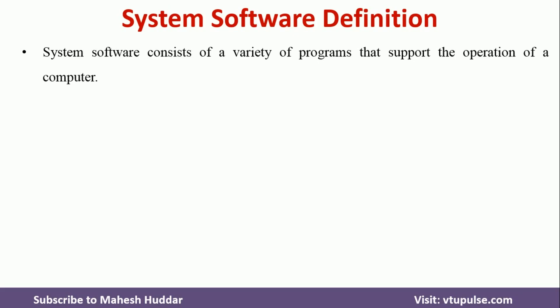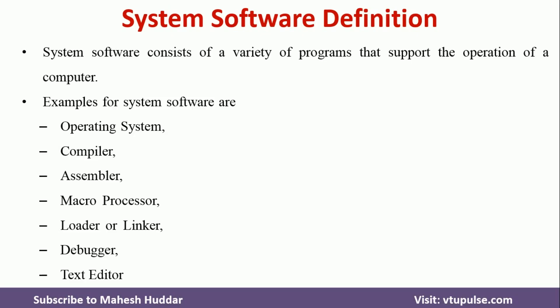What system software does is it helps us to use the computer or any hardware. Some of the examples for system software are operating systems, compilers, assemblers, macroprocessors, loaders and linkers, debuggers, text editors, and so on. These are all examples of system software. Without system software, we will not be able to use the computer or any hardware.